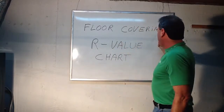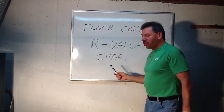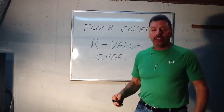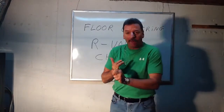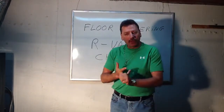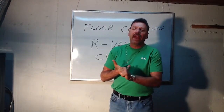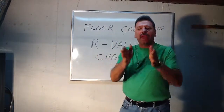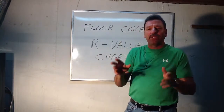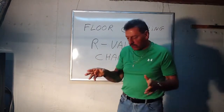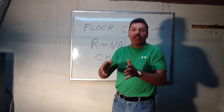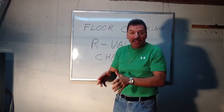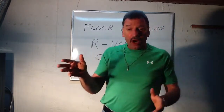Floor covering R-value chart. The chart is going to show you with tile, with carpet, and with oak flooring, ash flooring, and it starts with eighth inch because there's vinyl included. It goes up to quarter inch, half inch — different thicknesses of the floor, be it oak or carpet.